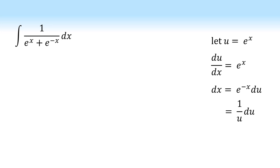But e to the minus x is just 1 over e to the x, which is 1 over u. So dx equals 1 over u du.